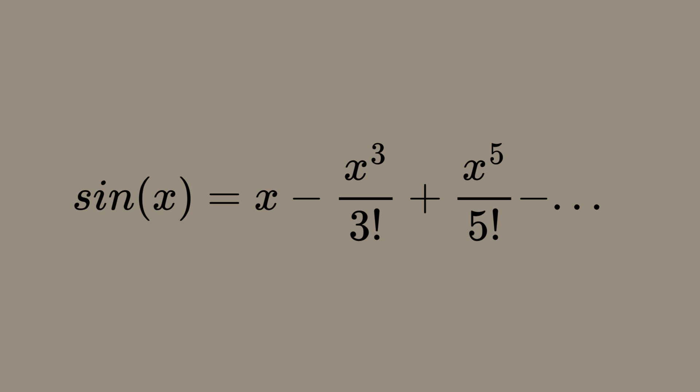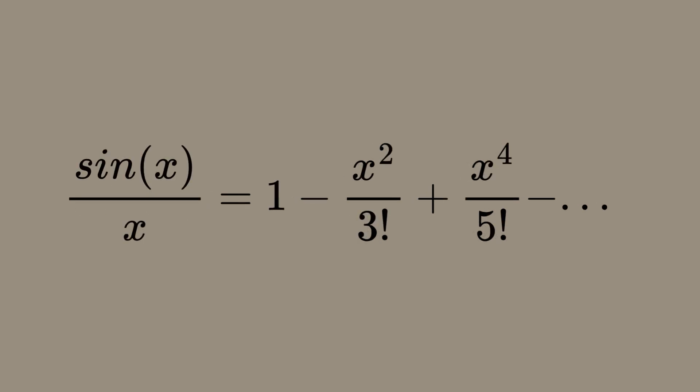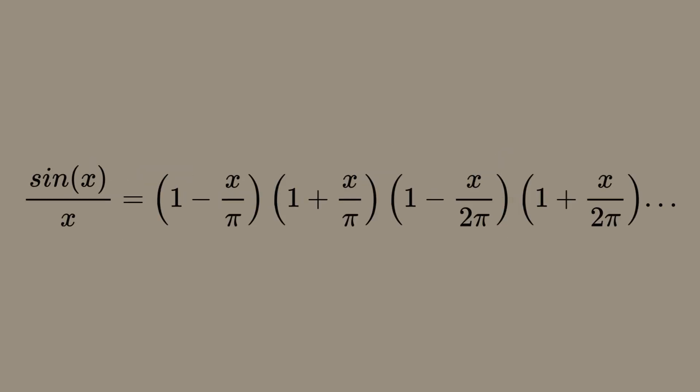By equating the coefficients from both expansions, Euler made a stunning discovery. Euler realized that when you divide the expansion by x on both sides, the coefficient of x² in the expansion could be used to find the desired sum.